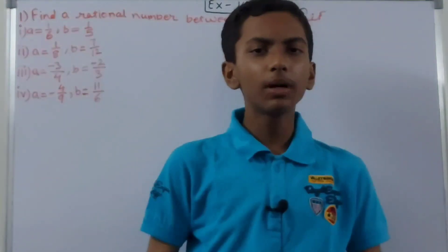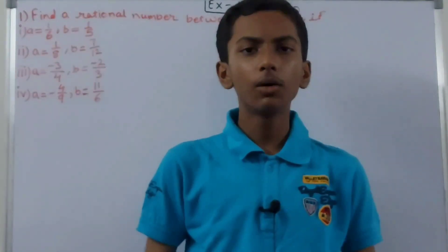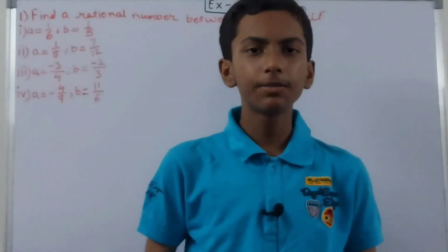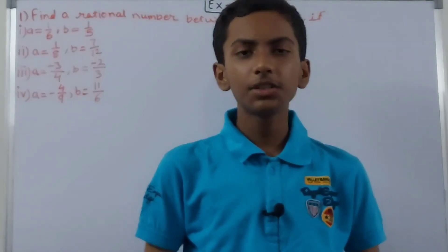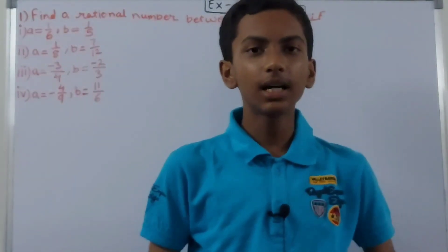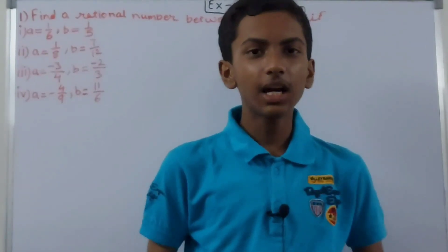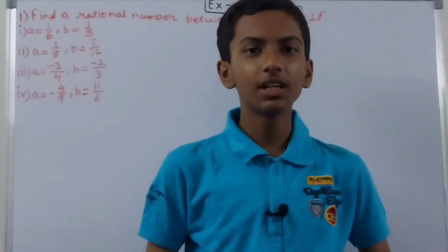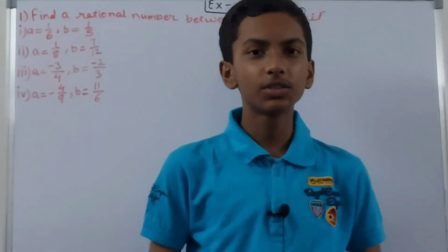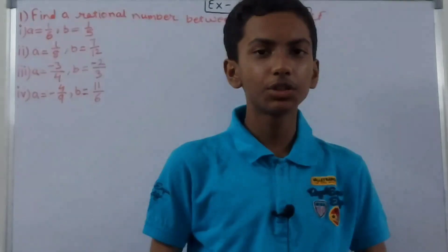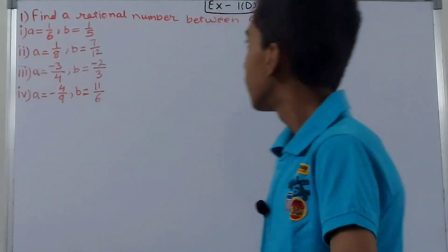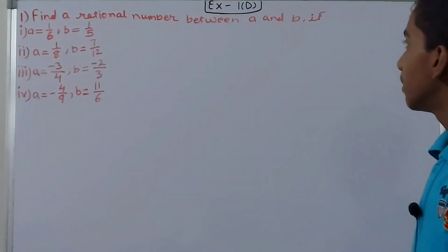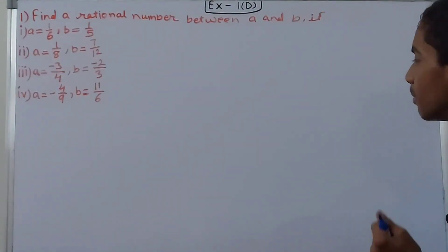Hello friends, welcome back to my YouTube channel Lock Your Learning. In this video we are going to solve ICFC Mathematics Class 8, Chapter 1, Rational Numbers, Exercise 1D, Question Number 1. It says: find a rational number between a and b, where values of a and b are given.